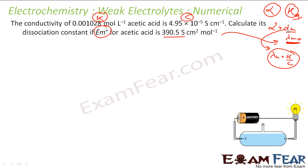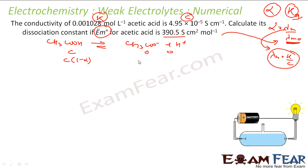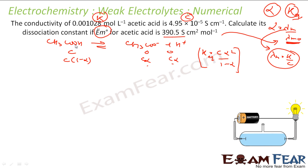Once I have λM I can find alpha, and once I have alpha I can find K. For acetic acid, the equation is: CH₃COOH ⇌ CH₃COO⁻ + H⁺. Assuming initial concentration C, at equilibrium this becomes C(1−α) and Cα respectively. So K = C·α² / (1−α), which is concentration of CH₃COO⁻ times concentration of H⁺ divided by concentration of CH₃COOH.